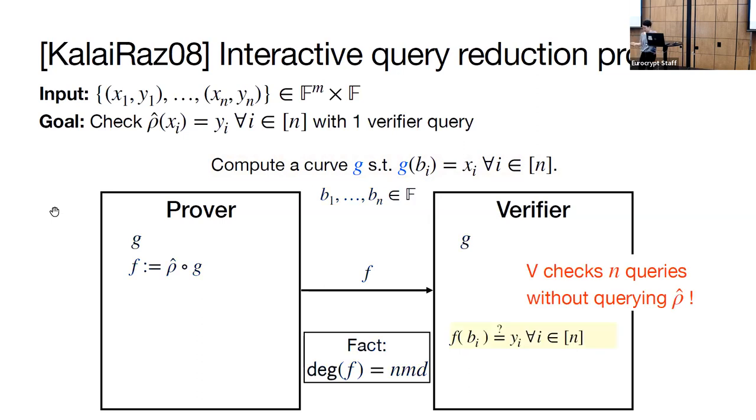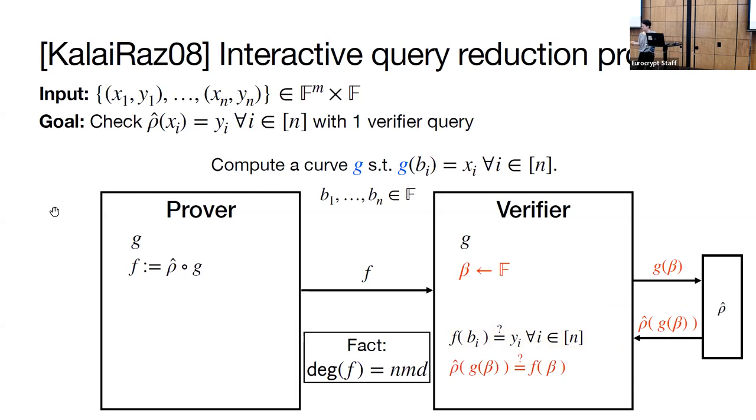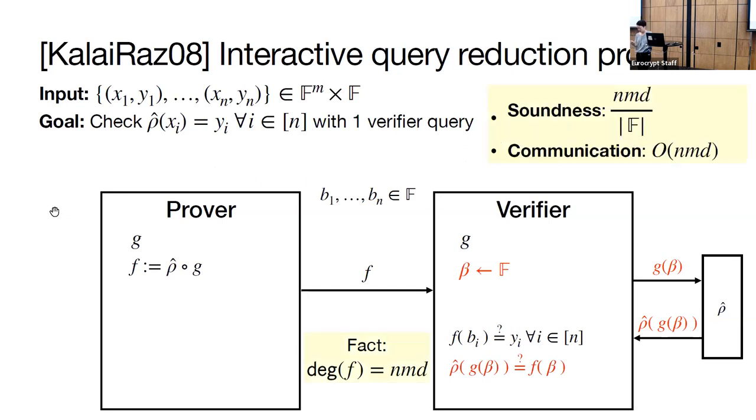Now, the verifier can check all n queries without querying the oracle at all. Instead, it checks that f of bi equals yi. This works because the oracle queries xi are the outputs of the polynomial g, and f is rho hat composed with g. For soundness, the verifier checks that the prover constructed f correctly, that f is actually rho hat composed with g. To do this, the verifier picks a random challenge point beta and applies the function g to it. Then it queries the oracle rho hat at g of beta. The expected oracle response will be rho hat of g of beta. Then the verifier can check that this value is the same as the value of evaluating f at beta. The soundness of the scheme is n times m times d over the size of the field. The communication complexity of the scheme is O of n times m times d because that's the number of field elements required to define the function f.